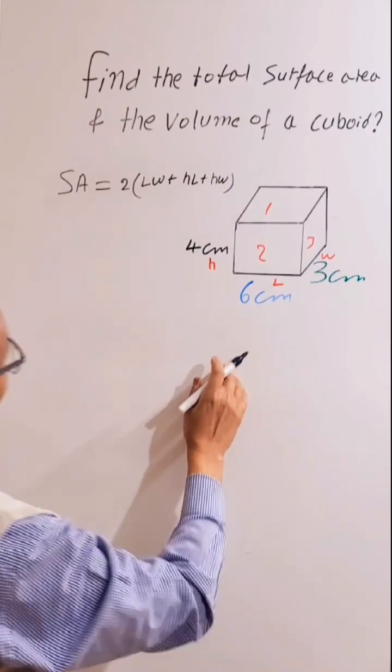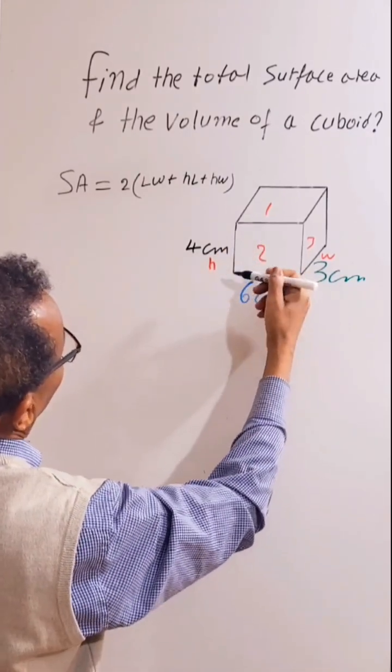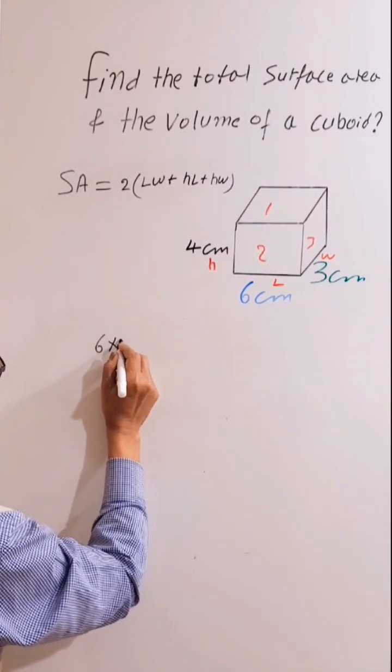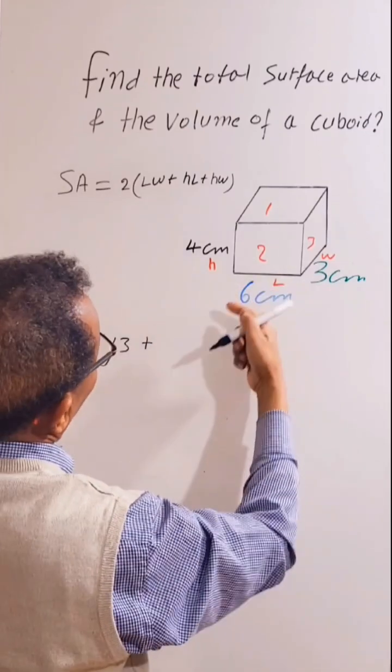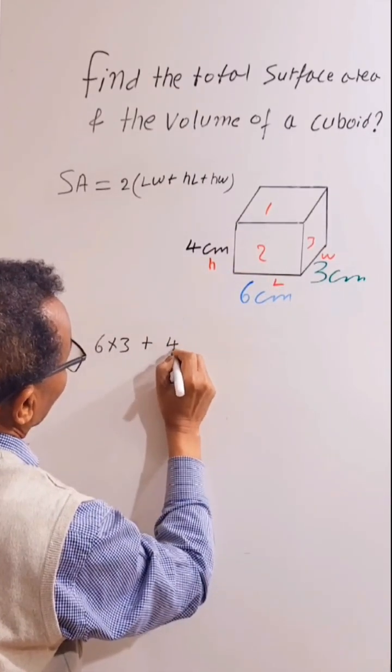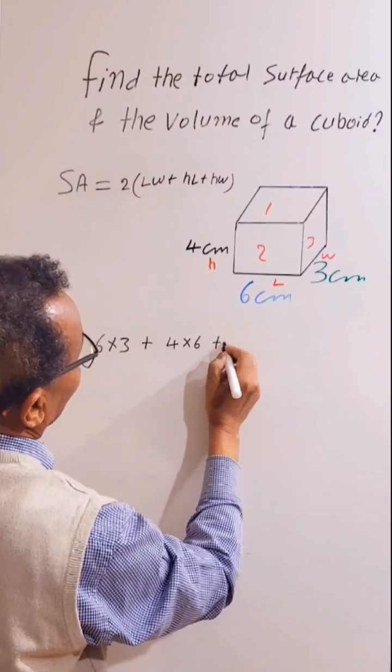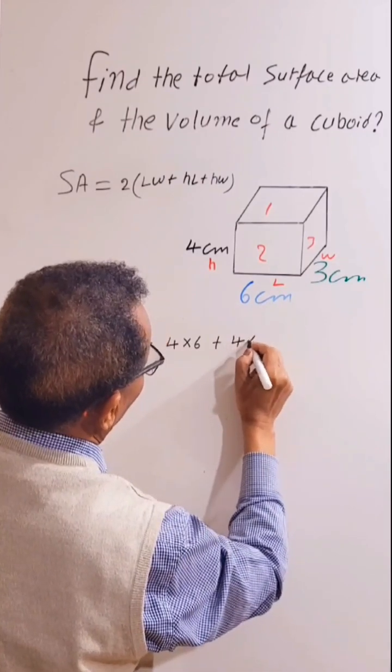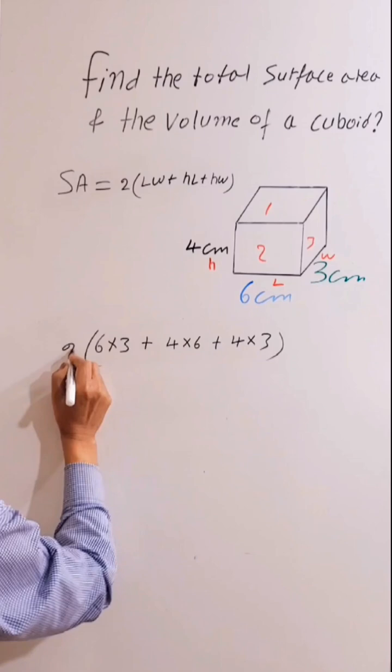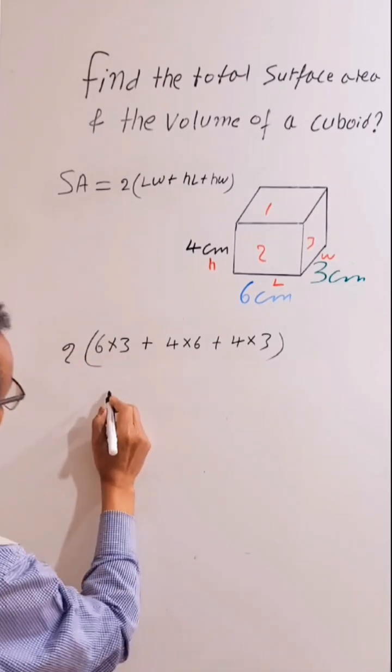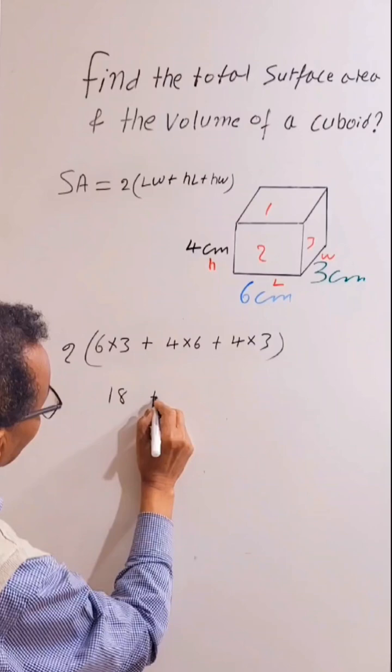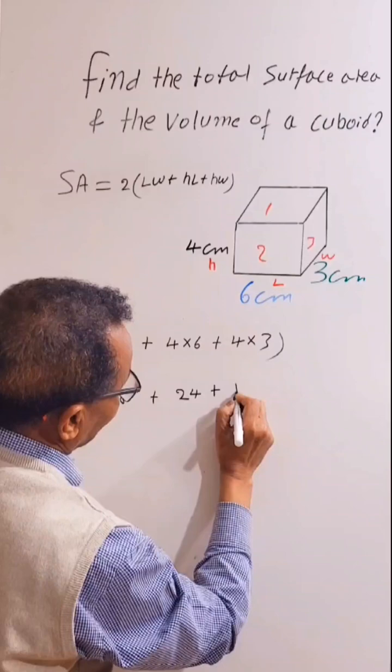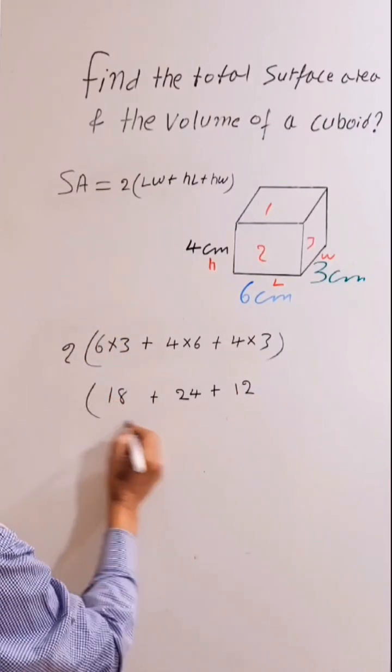So let's substitute. Number one is length times width, which is 6 times 3. Plus number two, height times length, which is 4 times 6. Plus number three, width and height, which is 4 times 3, and all times two. So 6 times 3 is 18, plus 4 times 6 is 24, plus 4 times 3 is 12, and all times two.